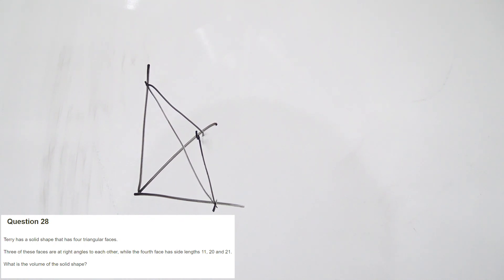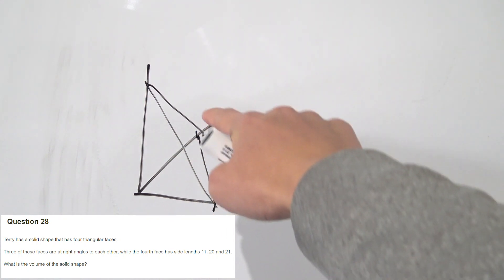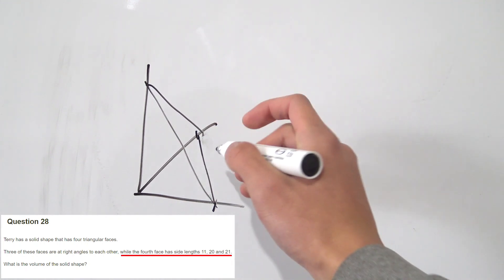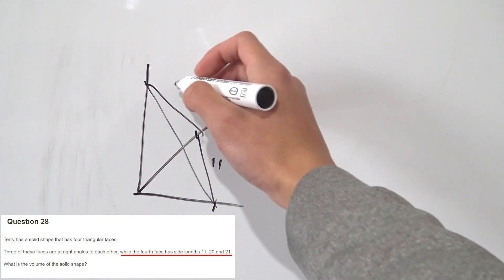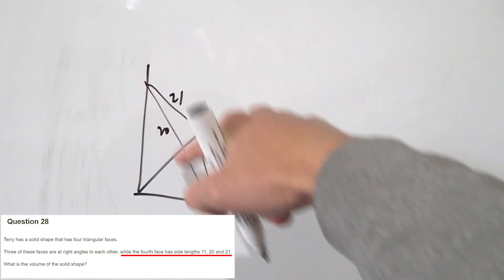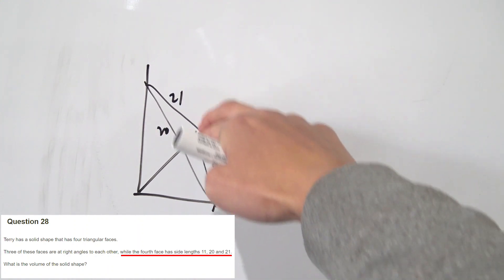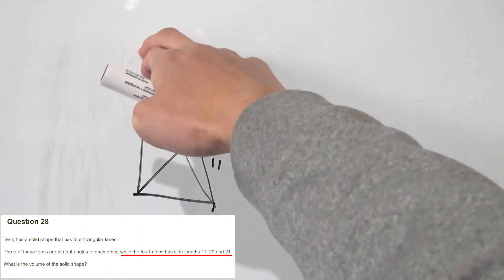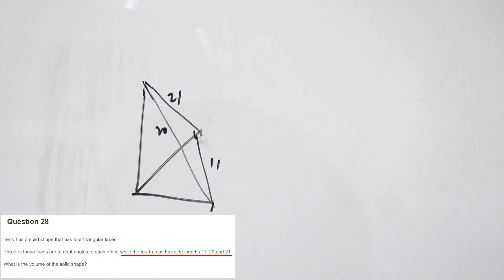And then now we have a four-sided tetrahedron box thing. And what other information are we given? We know that these lengths here of this last face, it has side lengths of 11, 20 and 21. So let's just put them in. Doesn't matter which order. 11, 21 and 20. Those are the three sides of that triangle. So this is kind of like the shape we're given. And the question asked us to find the volume of this thing right here.